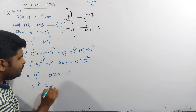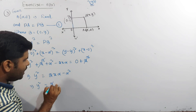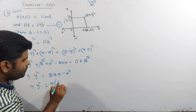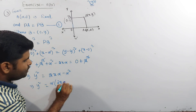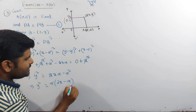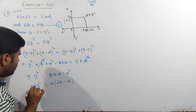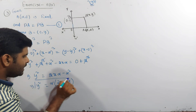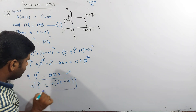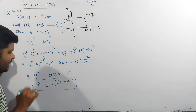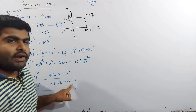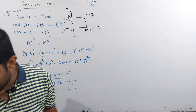y² equals 2xα − α². Therefore y² = α(2x − α).